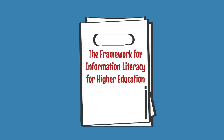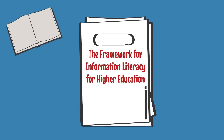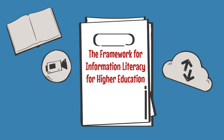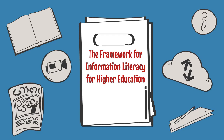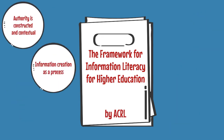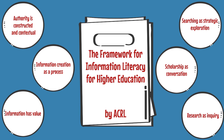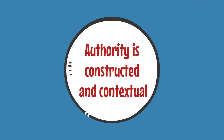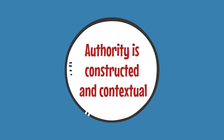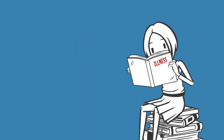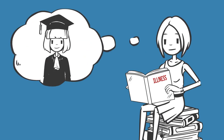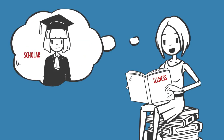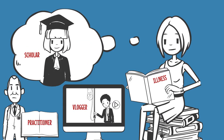The Framework for Information Literacy for Higher Education is a guiding document about information literacy developed by the Association of College and Research Libraries, also known as ACRL. It is made up of six interconnected core concepts called frames. This video will focus on one frame: Authority is constructed and contextual. This concept encourages information users to think critically about the credibility of their information sources and what types of authority the authors have in the context of how the information is to be used.